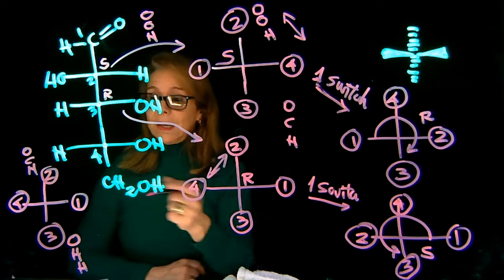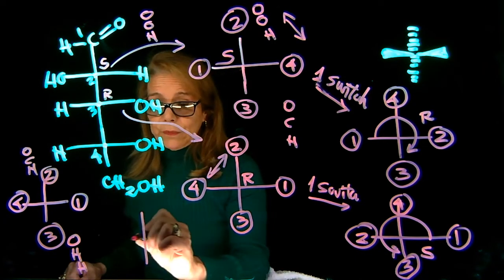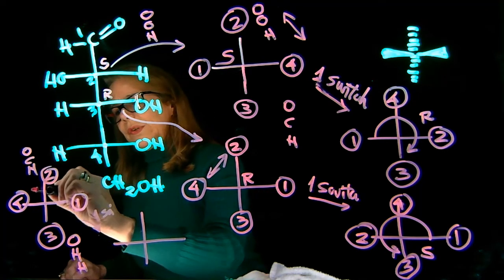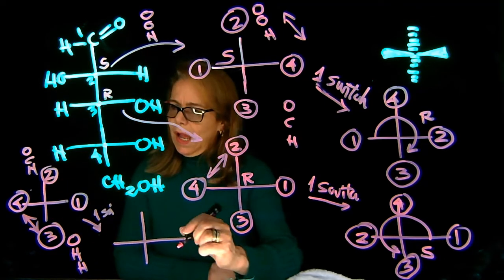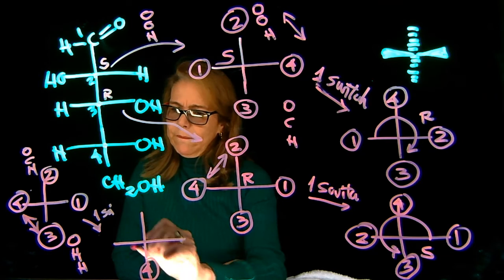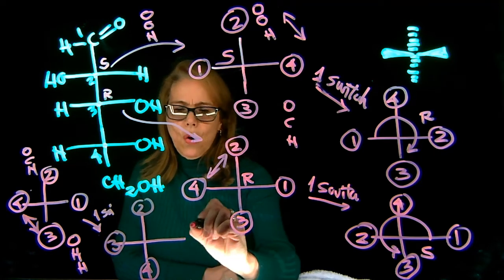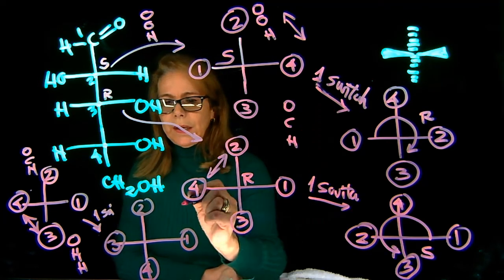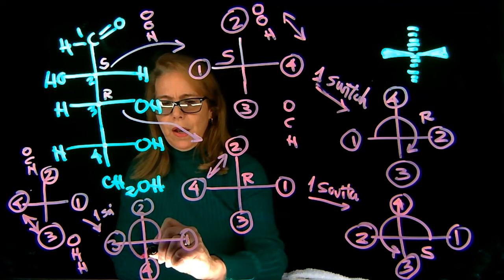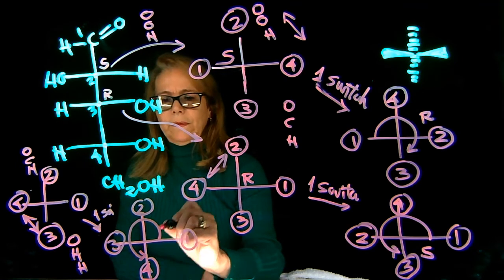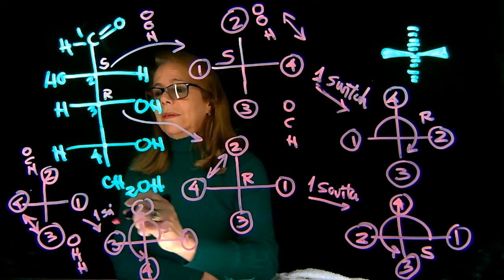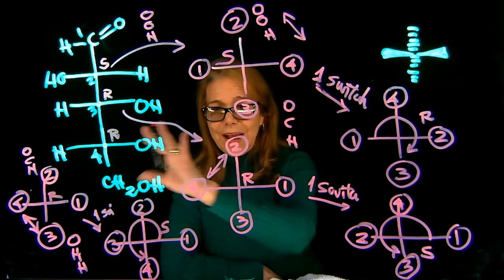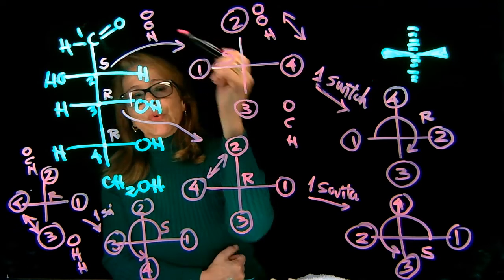Next we're viewing that incorrectly, so I'm going to do one switch again. Let's switch these two. Now I have the lowest priority group on a dash, how I want it. I can do 1, 2, and 3. It is counterclockwise, so that means the original is S, this is R. So I have determined that the configuration of the original molecule is carbon 2 is S, carbon 3 is R, and carbon 4 is R.